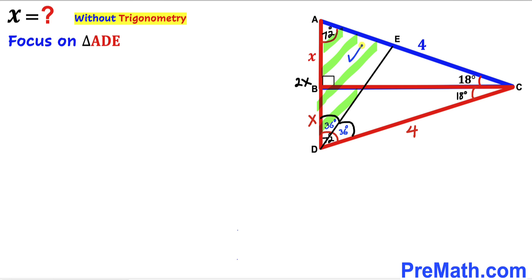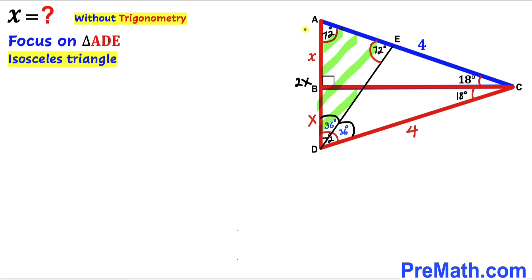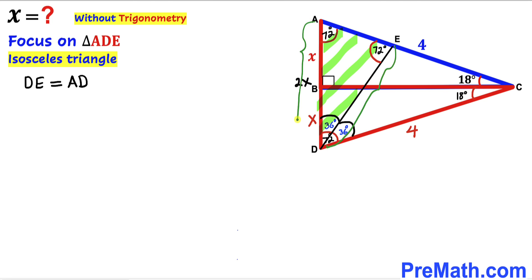Now let's focus on triangle ADE. In this triangle this angle is 36 degrees, this angle is 72 degrees, so the remaining angle is 72 degrees as well, since the sum of all three interior angles adds up to 180 degrees. Triangle ADE is an isosceles triangle since these two angles are congruent, so DE is equal to AD. Since AD is 2x, DE is also 2x.